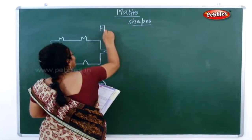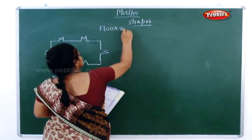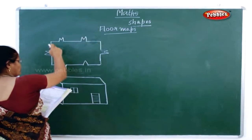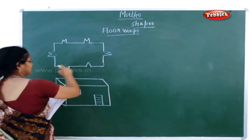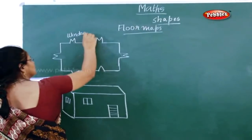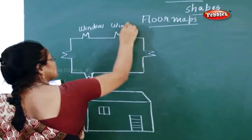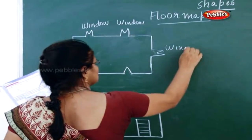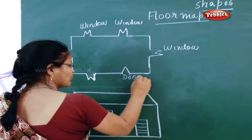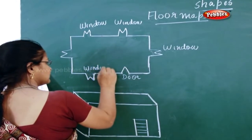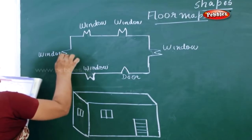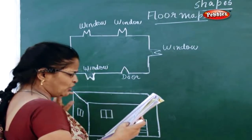Next we will go on with floor maps. In floor maps, to make a house a floor map is necessary. This is also a floor map - this is what you call a floor map. This is a door, this is a window, and this is a floor map of a house.